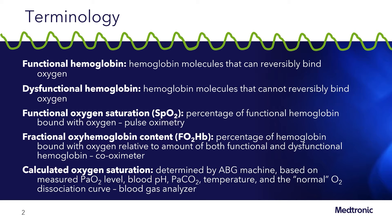Calculated oxygen saturation is determined by an arterial blood gas machine, and it's based on the measured partial pressure of arterial oxygen, the blood pH, the partial pressure of carbon dioxide in the arterial blood, as well as temperature and the normal O2 dissociation curve.